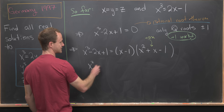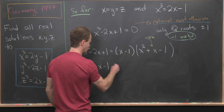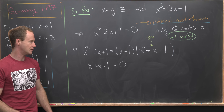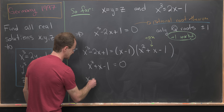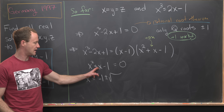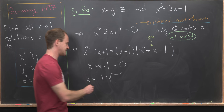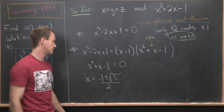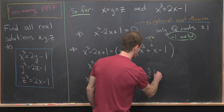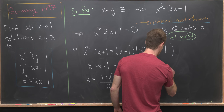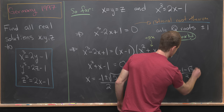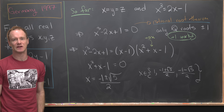One root comes from the rational root theorem: x equals 1. The other two roots come from solving the quadratic x squared plus x minus 1 equals 0 using the quadratic formula. That gives us x equals negative 1 plus or minus the square root of b squared minus 4ac, which is the square root of 5, all over 2. So x equals (-1 plus root 5)/2 or x equals (-1 minus root 5)/2.